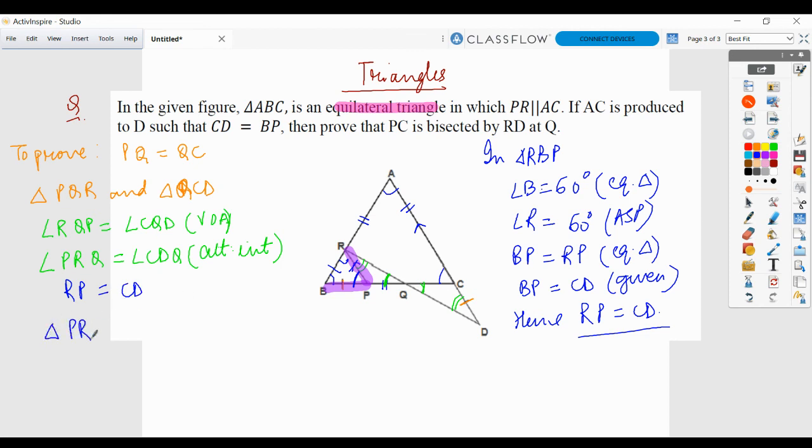So triangle PRQ is congruent to triangle CDQ. Let's see if our correspondence is correct. Q with Q, angle R with D and P with C. So we can say that PQ equals to QC by CPCT. Hence proved.